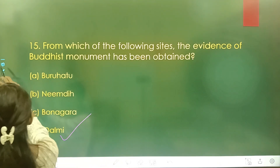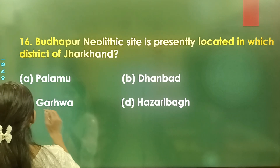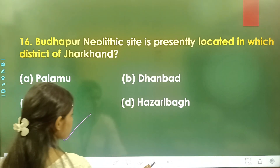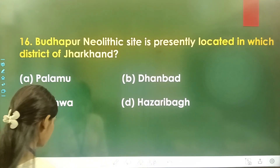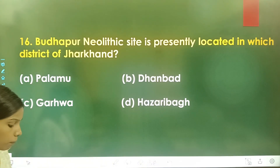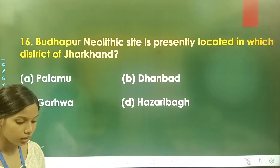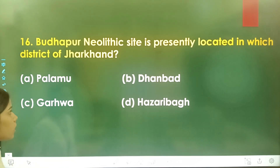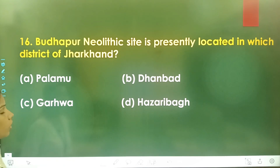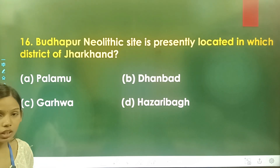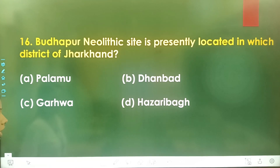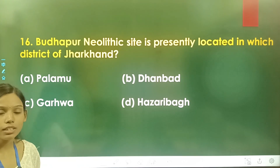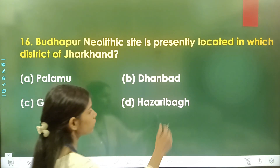Question number 16: Buddhapur Neolithic site is presently located in which district of Jharkhand? Option A is Palamu, option B is Dhanbad, option C is Garhwa, and option D is Hazaribag. The correct answer is option B, Dhanbad.